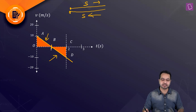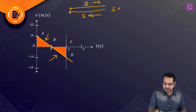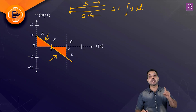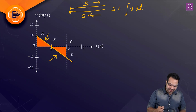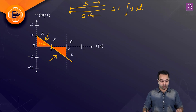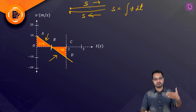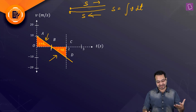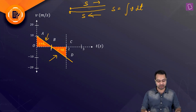The particle crosses its initial position when the displacement going forward equals the displacement going backward. Displacement in a velocity-time graph is the integral of v dt — the area under the velocity-time curve. From 0 to 1 second the area is positive, and from 1 to 2 seconds the area is negative because it is below the t-axis, meaning displacement is now in the opposite direction.